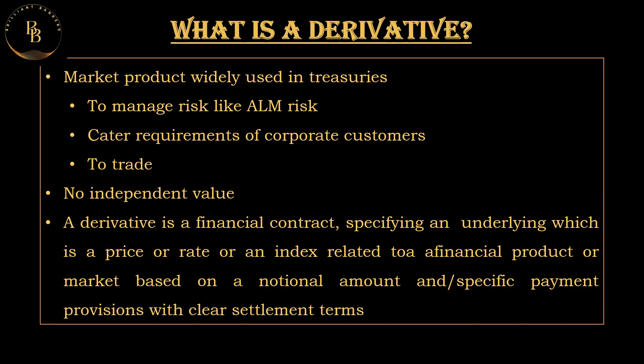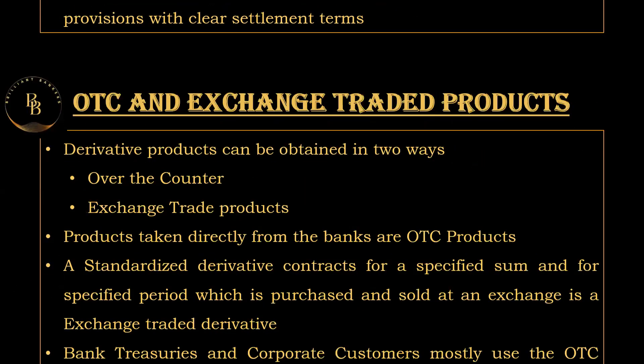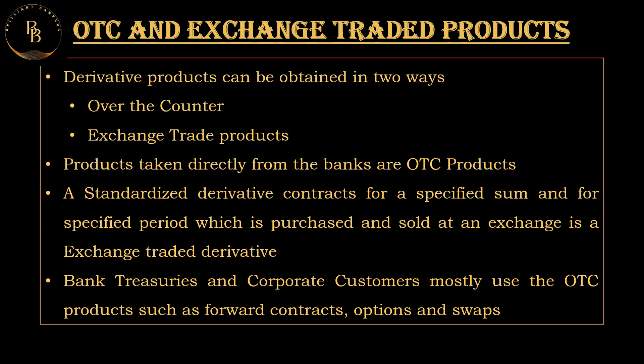Derivatives are traded in two ways: over-the-counter (OTC) and exchange-traded products. Products that can be directly purchased or sold from a bank are OTC products. Think of an OTC product like a direct deal between two parties — a private transaction, buying or selling something directly rather than going to a public marketplace or stock exchange.